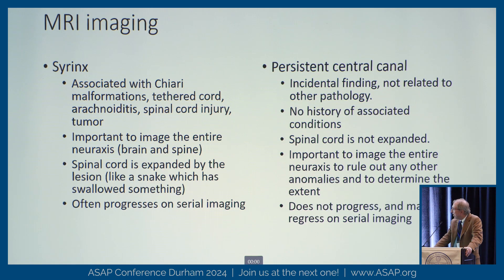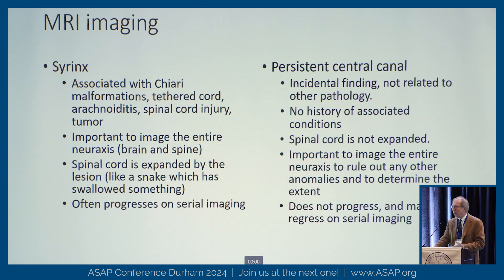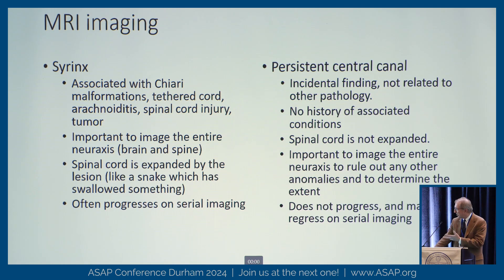With syrinx associated with malformations, it's important to image the entire neuraxis — looking for Chiari, tethered cord, signs of a spinal cord tumor, arachnoiditis, or a history of spinal cord injury with a deficit. When we see these lesions, typically the spinal cord is expanded — this is a fluid buildup within the spinal cord, like blowing up a water balloon inside it, expanding the cord. We often see this progress on serial imaging.